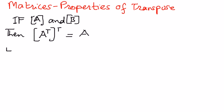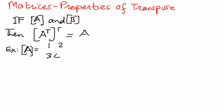Let me explain this with a simple example. If A is a 2 by 2 matrix and the elements of that matrix are 1, 2, 3, and 4.